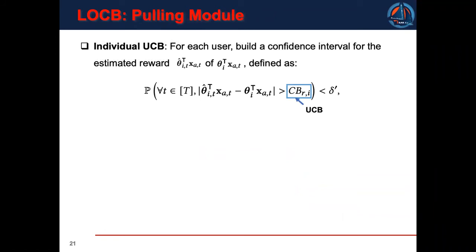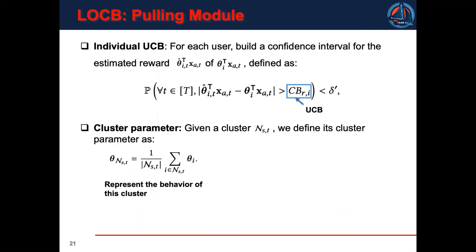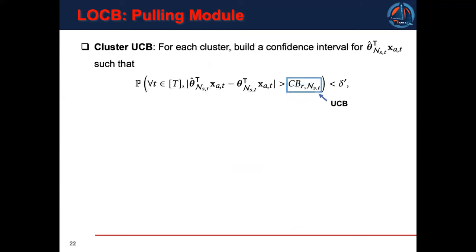Next, I will elaborate the pulling module. First, we need to build a confidence interval for the expected reward, which is the dot product of the user parameter and the arm feature vector. We denote the upper confidence bound by CB. Now, we want to use a parameter to represent the behavior of the cluster. Here, we define the cluster parameter as the average of the user parameters. Accordingly, we can calculate its estimation. Also, we can build a confidence interval for the reward computed by the cluster parameter instead of the user parameter. Thus, we obtain a new upper confidence bound.